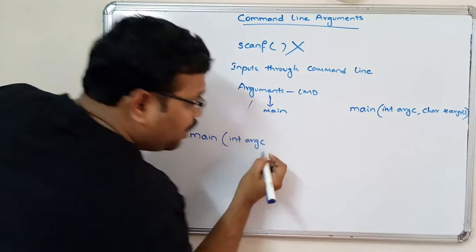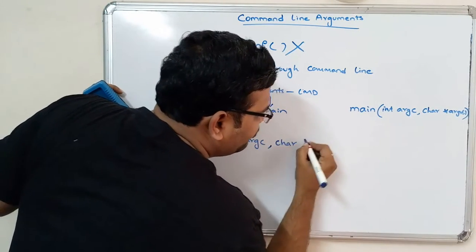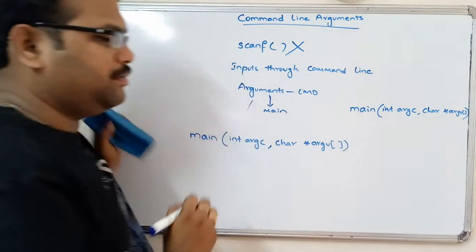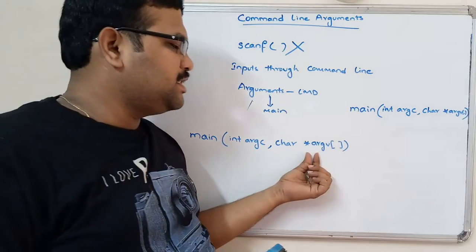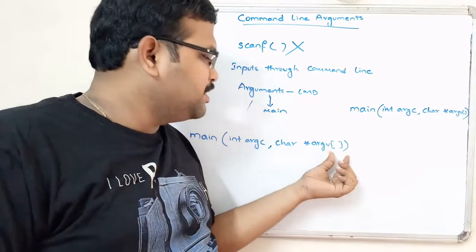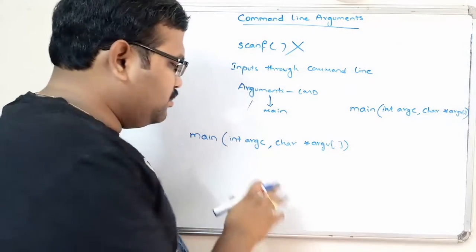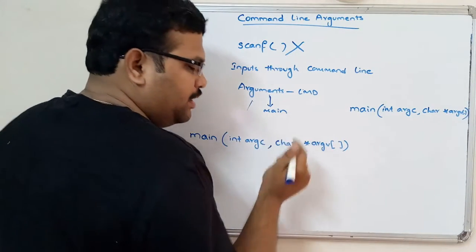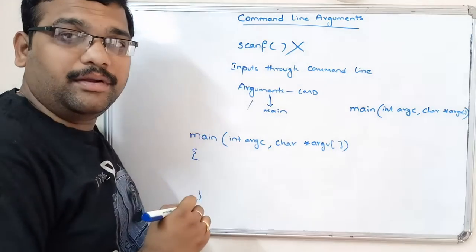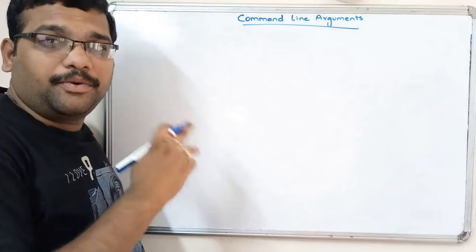So two arguments: one is the argument count (int argc), and the second argument is argument value (char *argv). We give the star because we don't know how many arguments we are passing, so we pass the address. So int argc and char *argv — with that we can write the program here. Let us write the program.